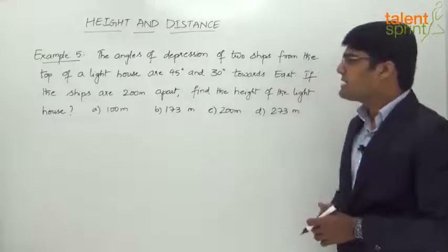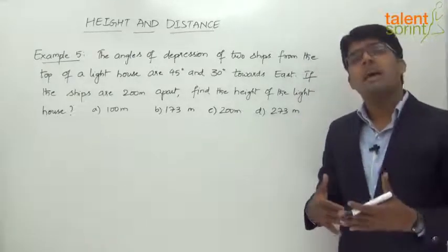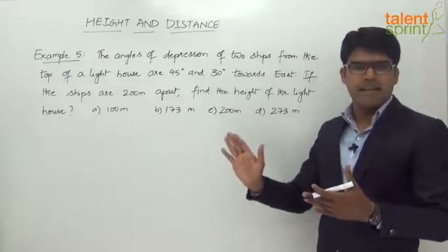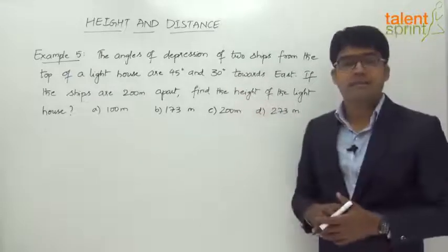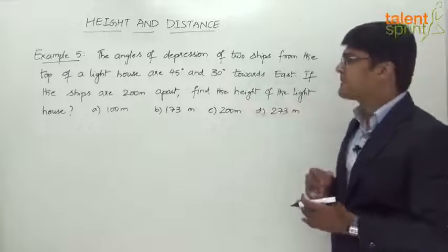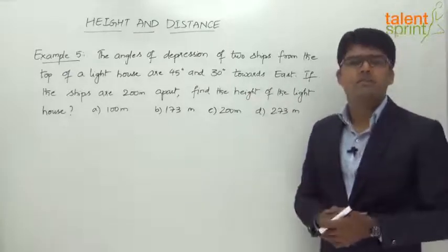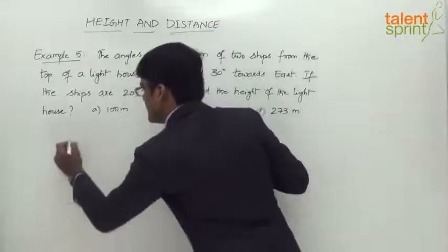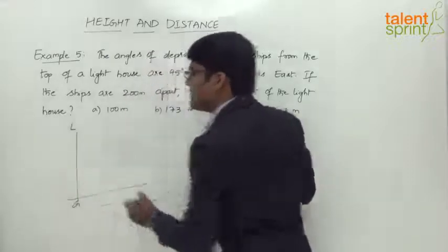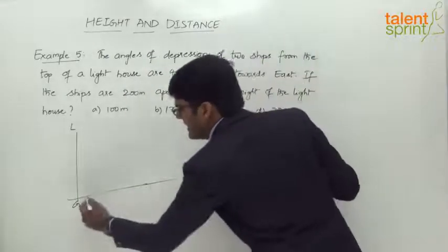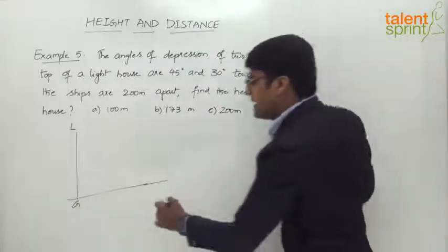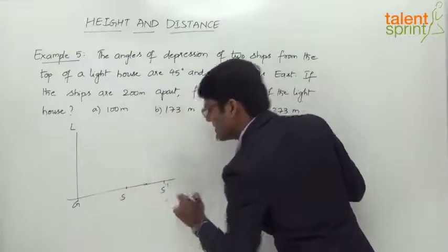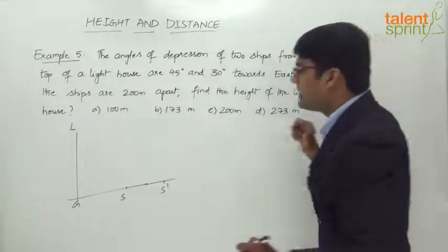This is the first question in the session on angles of depression. The angles of depression of two ships from the top of a lighthouse are 45 degrees and 30 degrees towards east — both towards east. The ships are 200 meters apart. Let's say this is the lighthouse, ground G, and the top of the lighthouse is L. This is the sea level, and there are two ships: ship S and ship S'.